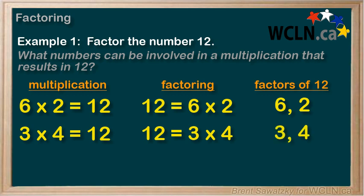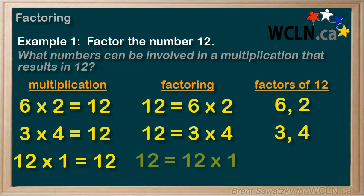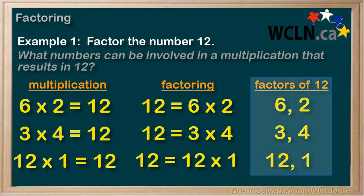Keep thinking — what else can be multiplied to get 12? Well, I suppose 12 times 1 equals 12. So 12 equals 12 times 1, and therefore we can list 12 and 1 as also factors of 12. So we have 6 factors of 12, or 3 factor pairs.